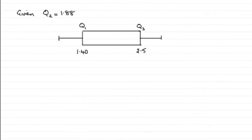Now for this last part we're given that the median of x is 1.88 and we've got to describe the skewness of the distribution, give a reason for our answer.